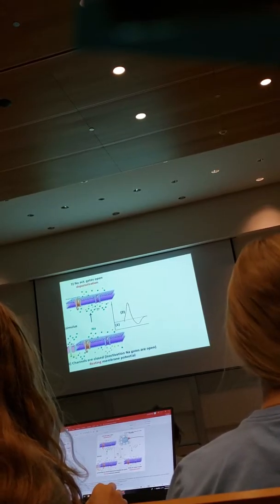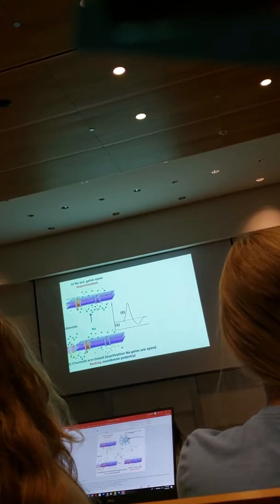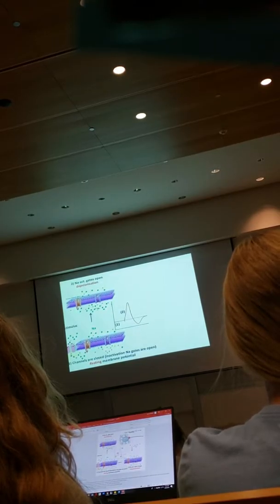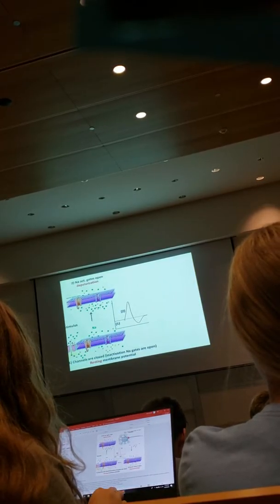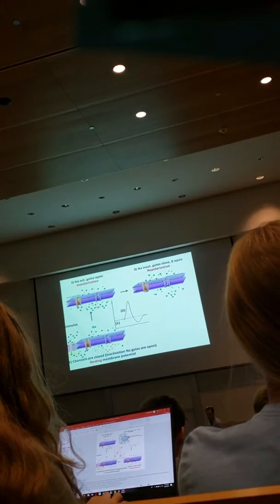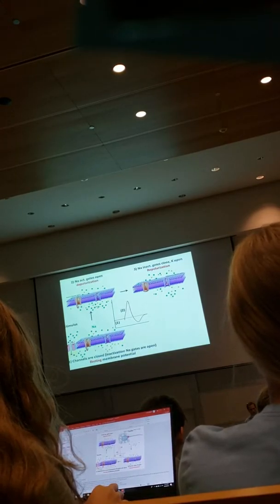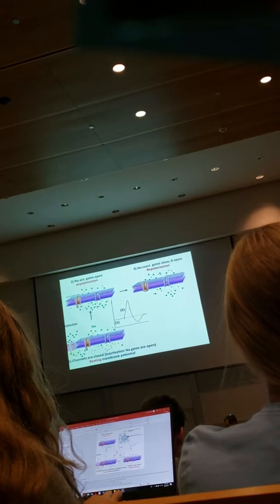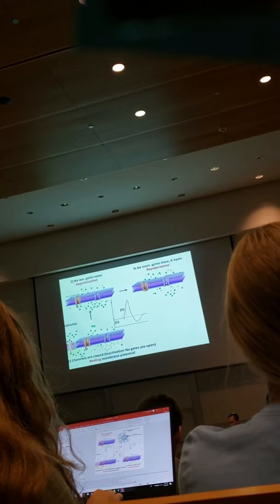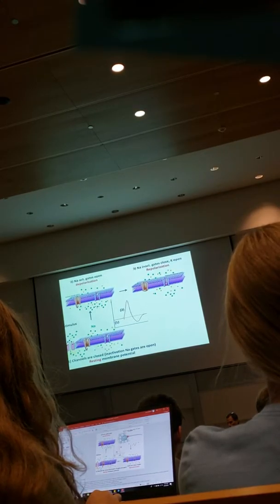Some potassium molecules do move out, but it's nothing compared to the sodium. To summarize: potassium voltage-gated channels, on average, start to open during the negative 55 threshold, but they're slow. So they completely open up around plus 30. As a result, we'll reach the next step, which is repolarization — we go back — but before that, let me answer a question about the activation gate.